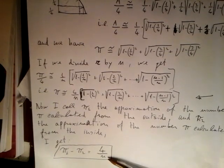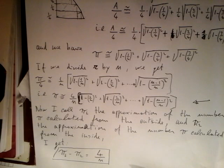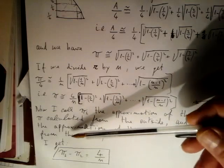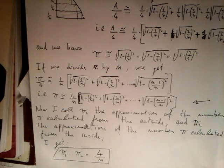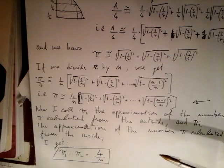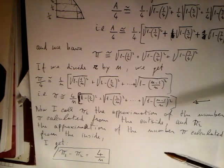And I obtain exactly this: pi 1 minus pi 2 equals 4 over n, which we can see that when we increase n, the difference tends to 0 — it becomes near to 0. So if I take, for example, n equals 1 million, I get that the difference is 4 over 1 million, and it can be made as little as we wish, which is a good result.